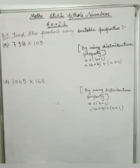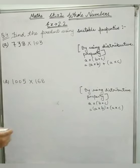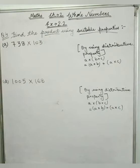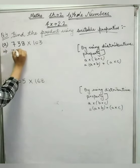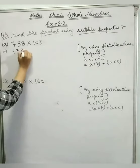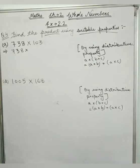Find the product using suitable properties. Now when we study the properties, we will use them to find the product. So part A: 738 into 103. Now see how the properties are used. The multiplication is easy. So 738 multiply by, now this is 103.